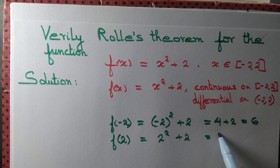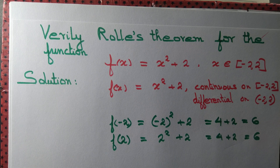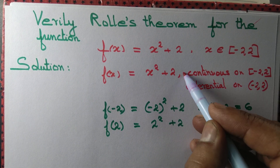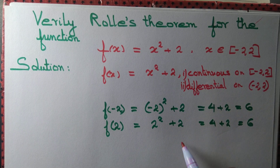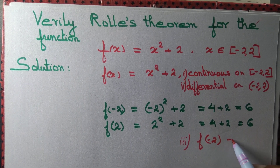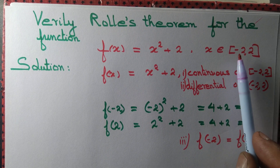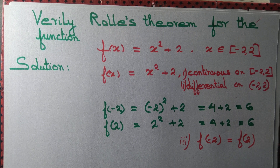The final answer is the same. So if we want to apply Rolle's theorem, we need to make sure the three conditions are true: first, the function must be continuous; second, the function must be differentiable; third, the value of the function at the endpoints — f(-2) and f(2) — must be equal. Yes, all three conditions are satisfied, so we can apply Rolle's theorem.